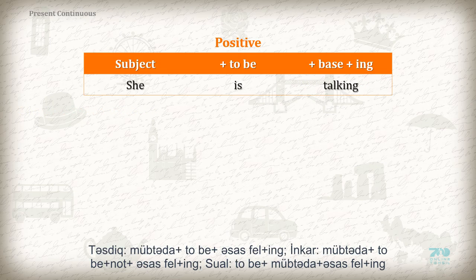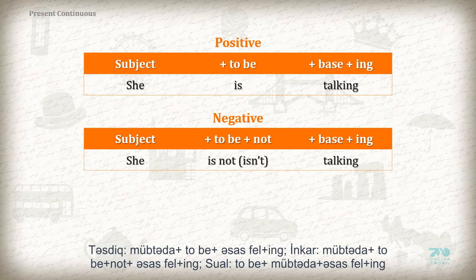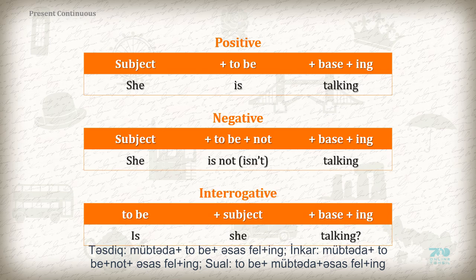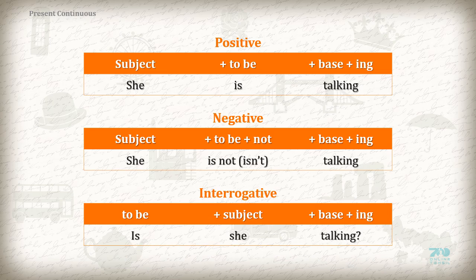Positive: Subject + to be + base + -ing. Example: 'She is talking.' Negative: Subject + to be + not + base + -ing. Example: 'She is not / isn't talking.' Interrogative: To be + subject + base + -ing. Example: 'Is she talking?'